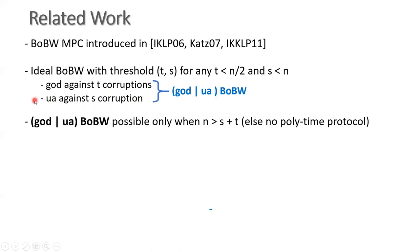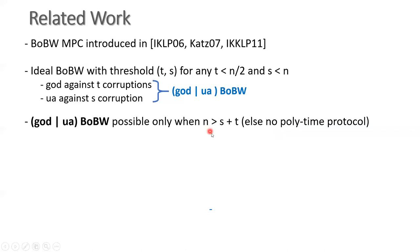While this combination is indeed ideal, the works of Ishai and others showed that ideal GOD-UA best of both worlds is possible only if the number of parties N is strictly greater than the sum of thresholds S and T. So they showed that if this condition does not hold, then it is not possible to design a polynomial-time protocol that achieves GOD against T corruptions and UA against S corruptions simultaneously. Subsequently, there were works which explored if this constraint could be circumvented, and to get around it, one has to weaken the security in either the honest or dishonest majority setting.